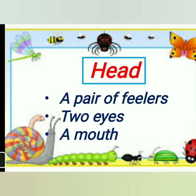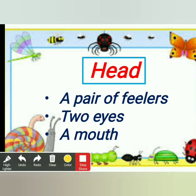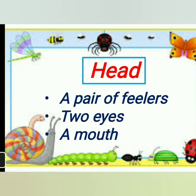The head of an insect includes a pair of feelers, two eyes, and a mouth. You know what feelers are? You can ask your parents if they've seen a TV with antennae — a TV that has two antennas used for catching signals. In the same way, insects have antennae on their head, and with the help of these antennae, they smell things and feel things.